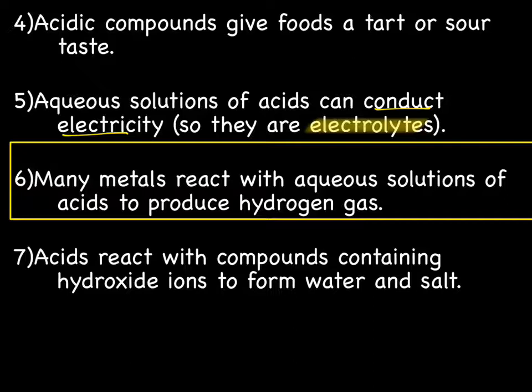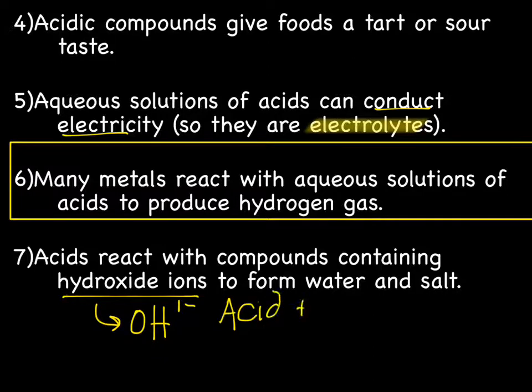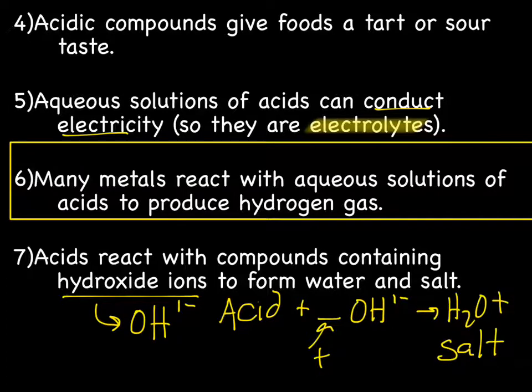And acids react with compounds containing hydroxide ions, which are OH1 minus, to form water and salt. So acids react with compounds containing hydroxide ions to form water and salt. So you'd have an equation like this. An acid plus something OH1 minus, the something being the cation, produces H2O plus some salt. And a salt is a binary ionic compound. So that's what we have to go over as far as acids go.